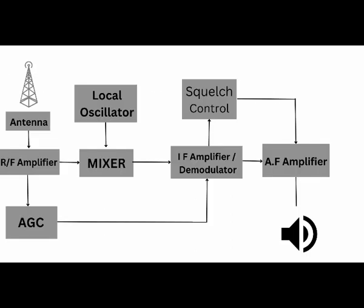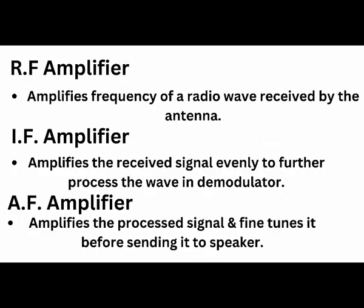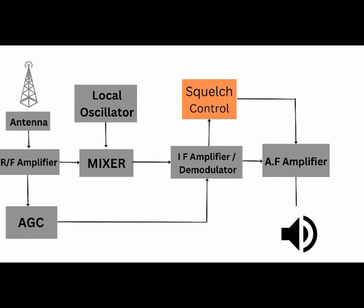After the IF amplifier, demodulation occurs — in simple words, demodulation is filtering the information out of the radio wave. After demodulation comes the AF amplifier, also known as the audio amplifier, which fine-tunes the information before passing it to the speaker as audio. There is also an important setting called squelch control — it adjusts the amount of audio amplification applied to the audio before it is converted into voice through the speaker. In simpler terms, squelch eliminates receiver noise when there is no signal.